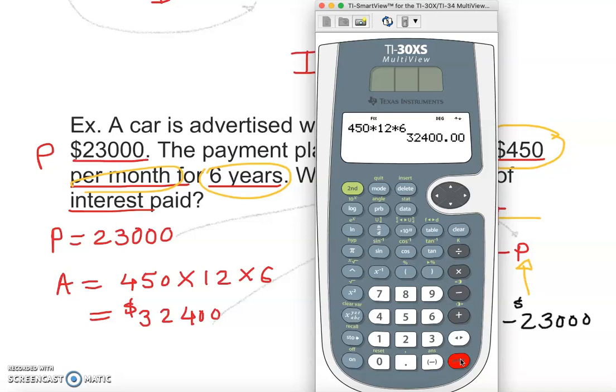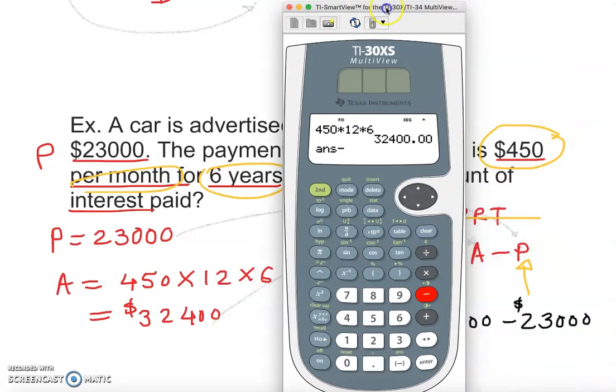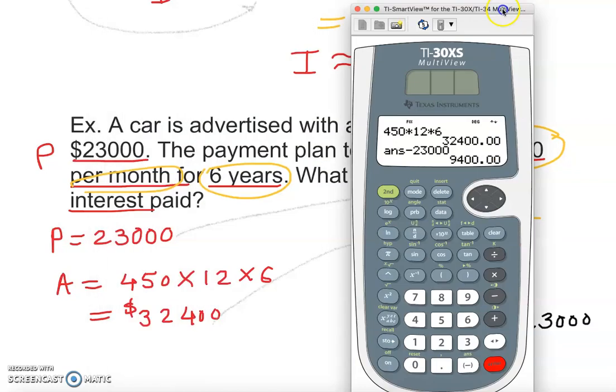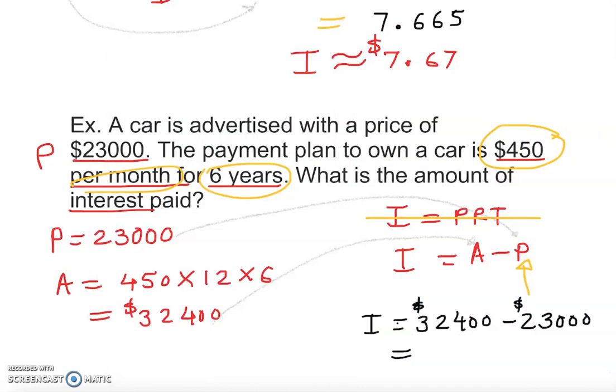If you do this math, we just subtract it. Let's put this one on this side: minus $23,000.